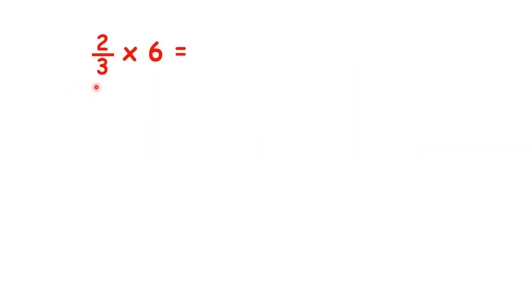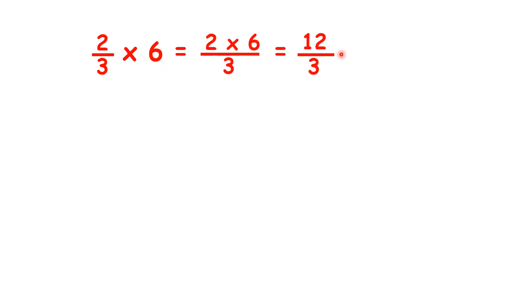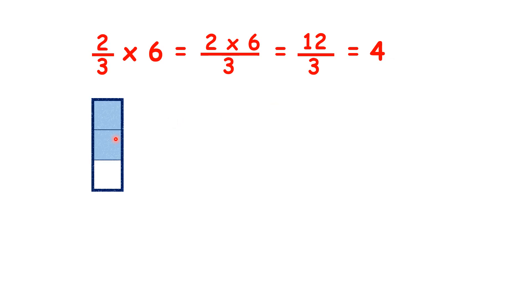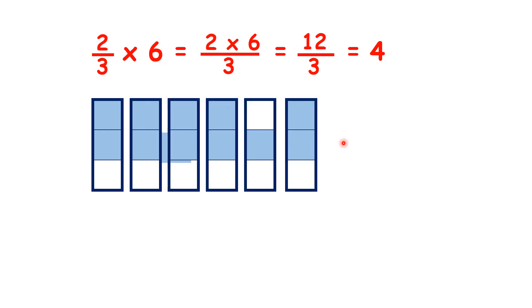So what is two thirds times six? We're doing two times six, that gives us 12. And 12 over three is the same as 12 divided by three, so it's exactly four. You can see that if you have two thirds and multiply it by six, you can regroup to make exactly four.